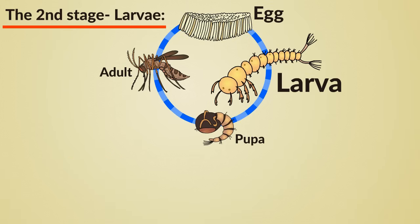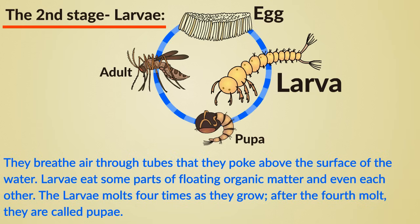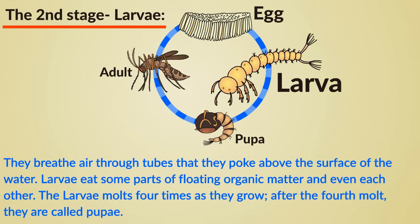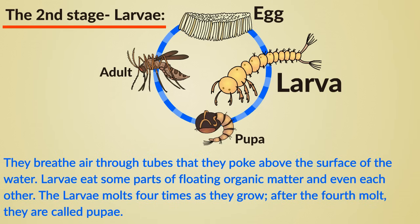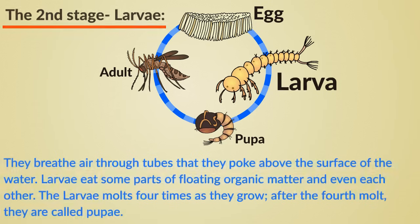The second stage: larvae. They breathe air through tubes that they poke above the surface of the water. Larvae eat some parts of floating organic matter and even each other. The larvae molts four times as they grow. After the fourth molt, they are called pupae.